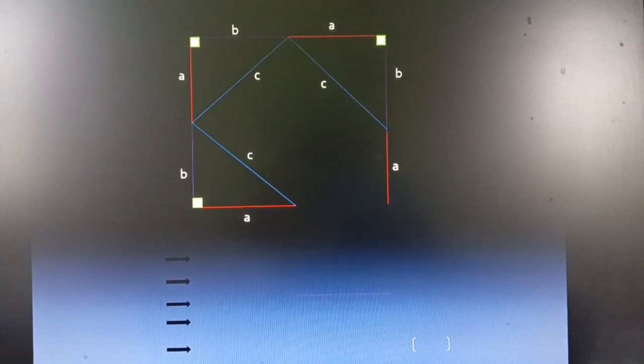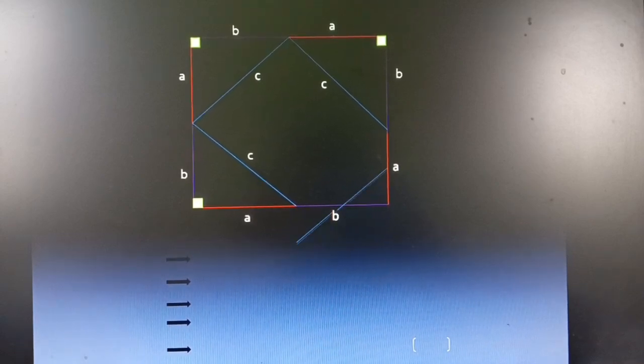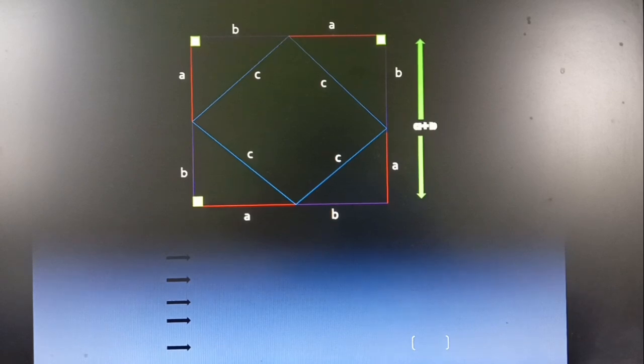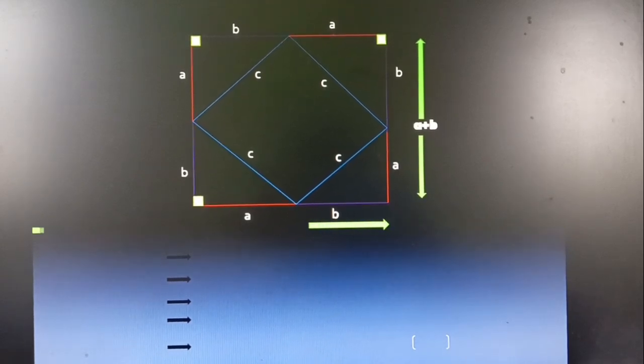From the final figure, we can observe that we have an outer square whose side length is A plus B and an inner square whose side length is C.